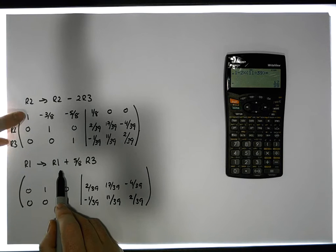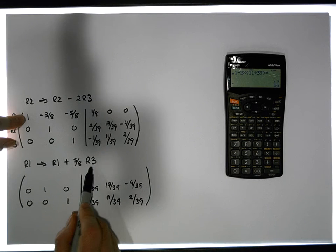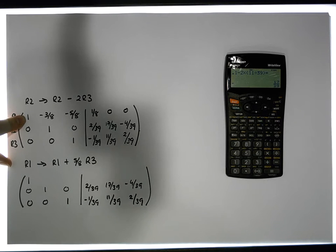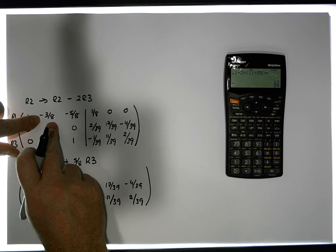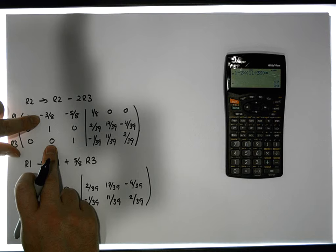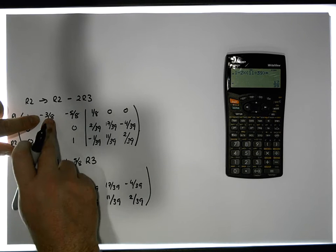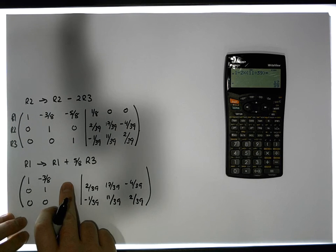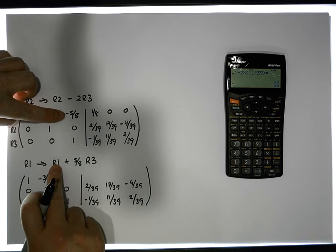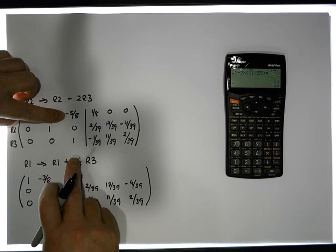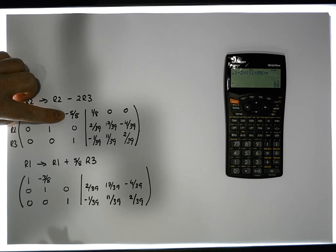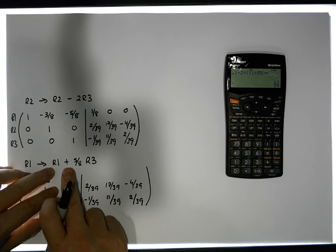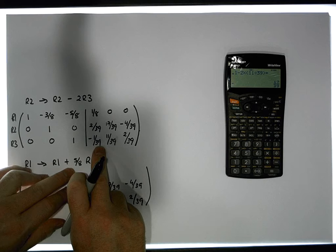So row one's value is one, and I need to add on 5/8 of row three's value. One plus 5/8 of zero just gives us one. Row one's current value is minus 3/8, and I need to add on 5/8 of row three's value. 5/8 of zero is zero, so minus 3/8 plus zero gives us minus 3/8. The third entry on row one is going to be the third entry on row one plus 5/8 of the third entry on row three. 5/8 of one is 5/8, and adding that onto negative 5/8 gives zero. The next entry is row one's current value, which is 1/8, plus 5/8 of row three's current value, which is minus 1/39. So let's do that in the calculator.